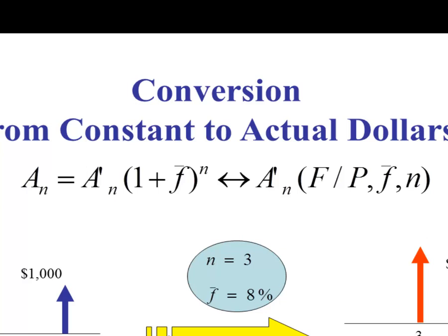...1 plus F, which is the average inflation rate, to the power N. This can also be written as A prime N multiplied by the factor (F given P), with the average inflation rate F-bar and number of periods N. Note that (F given P) is a notation for the conversion factor found at the end of the book — it is not division.